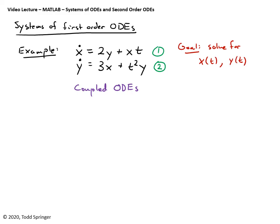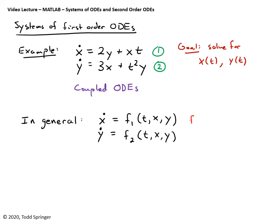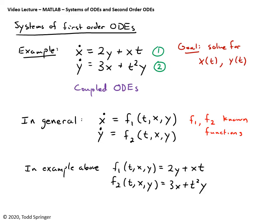In general, what does a system of ODEs look like? It looks like this: x-dot is some known function f1 of t, x, and y — so it depends on t, x, and y. And then I've got another equation: y-dot is some other known function f2 of t, x, and y. So f1 and f2 are known functions, but I don't know x and y. I need to solve those two ODEs simultaneously. In the example above, f1 is 2y + xt, and f2 is 3x + t²y.